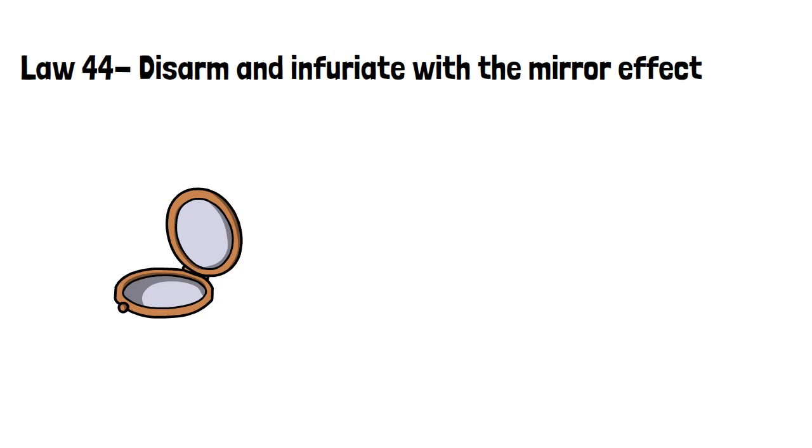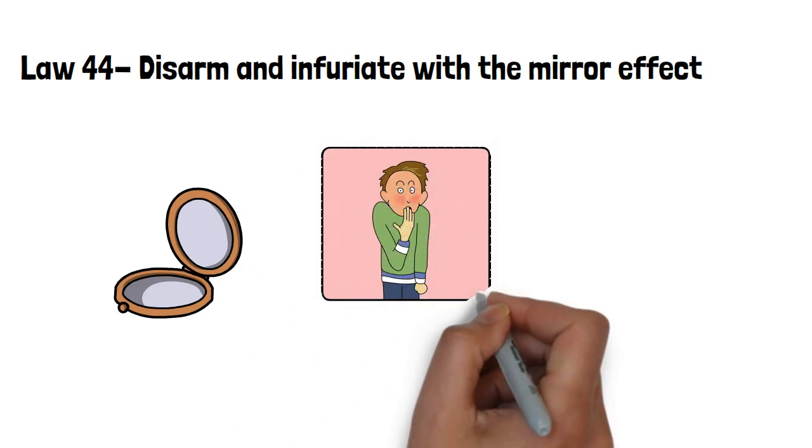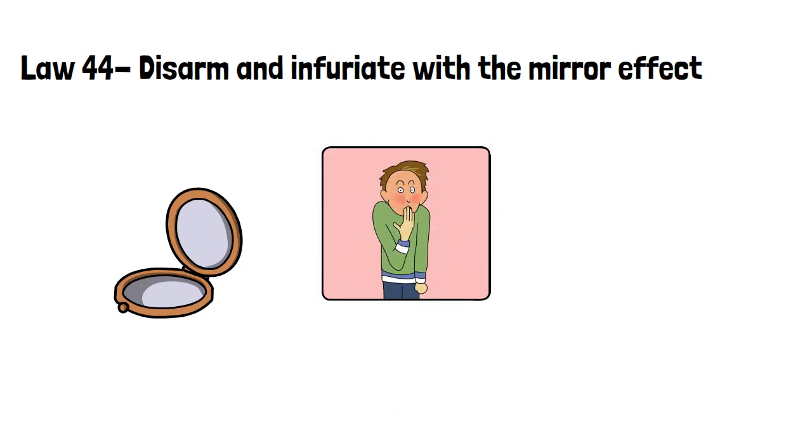Law 44, disarm and infuriate with the mirror effect. By mirroring your opponents and doing exactly as they do, you embarrass them and cause them to overreact. By making them believe you share their values, they will find it difficult to work out your strategy as they are blinded by your mirror.